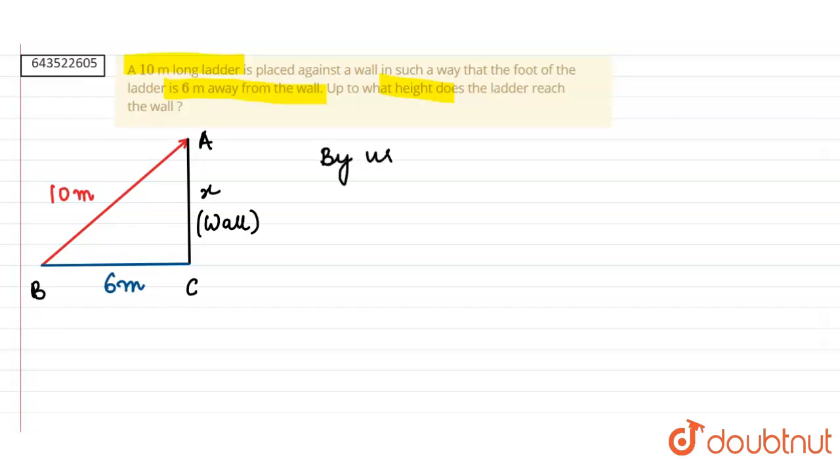By using Pythagorean theorem in the triangle ABC, we get AB squared equals AC squared plus BC squared.